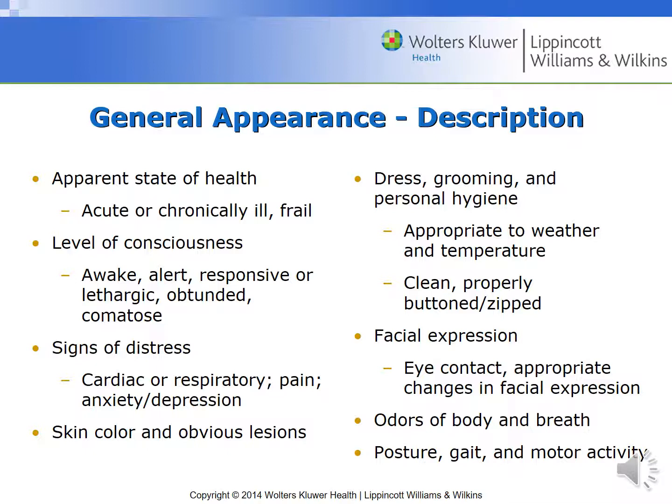To go over some of the components of the general appearance: a component of the general survey is you want to look at their apparent state of health. How are they presenting to you? Do they look their stated age? Do they look acute or chronically ill? You want to assess their level of consciousness — this is where you're checking their alert and orientation. Are they awake, alert, and oriented and responsive? So A and O times three or four, depending on where you work. Or are they lethargic, obtunded, or comatose? We'll go over some of these terms a little bit later.